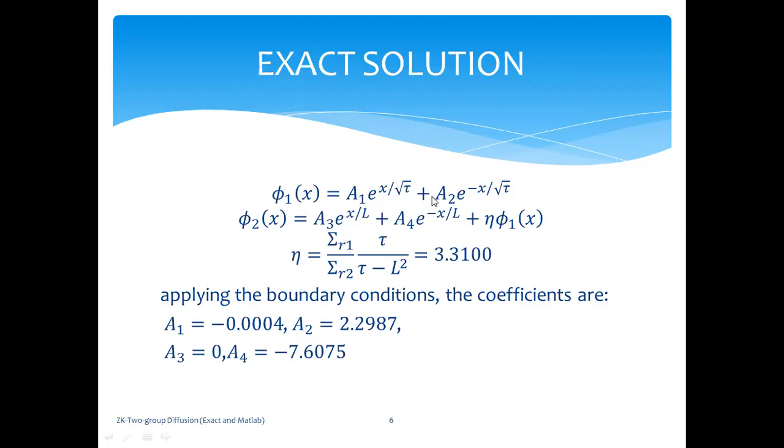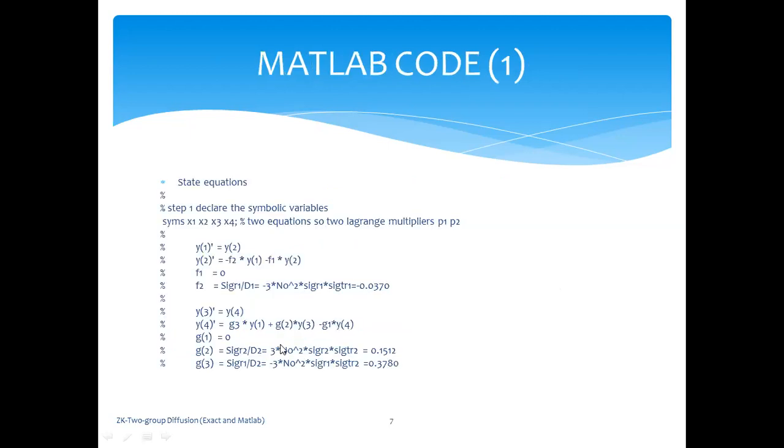So we've got four constants A1, A2, A3, and A4. We've got four boundary conditions. When you solve, which I'll just show you in the MATLAB program, then you get these values for the four boundary conditions.